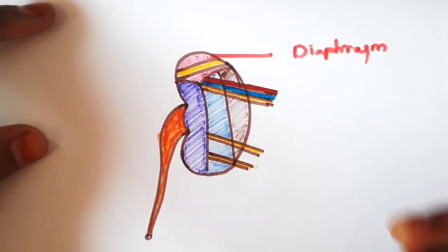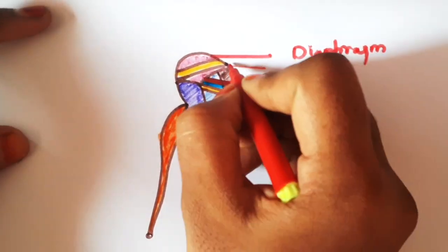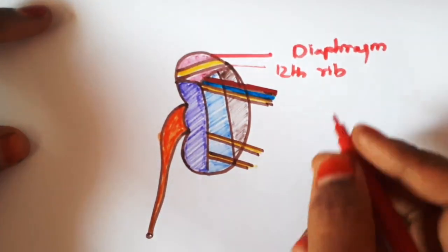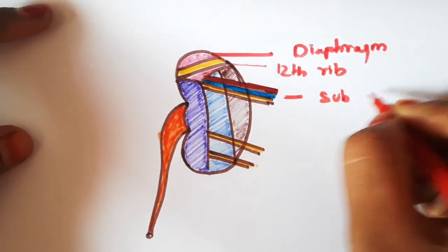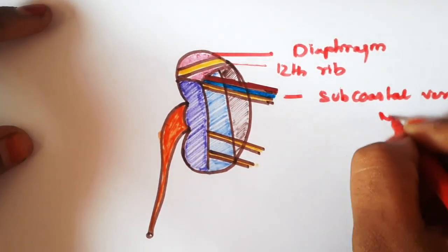This is the area related to the diaphragm. This is the impression of 12th rib for the right kidney, whereas the left kidney 11th and 12th rib. These are the subcostal vessels and nerves.